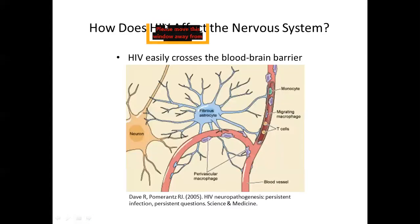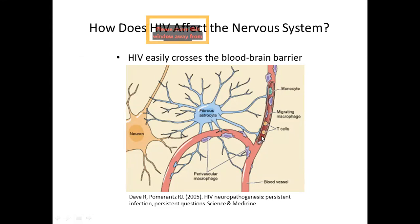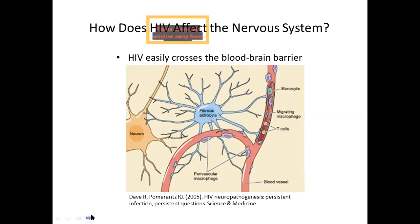How does HIV affect the nervous system? We can see the picture showing the blood-brain barrier. There are blood vessels in the CNS, then the endothelium and endothelial covering which is the blood-brain barrier, and then the different cells — the neurons and fibrous astrocytes in the CNS. HIV easily crosses the blood-brain barrier and impacts the CNS very early in the infection.